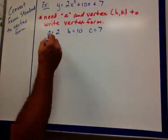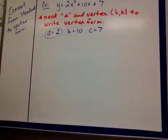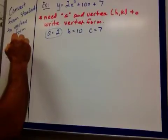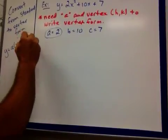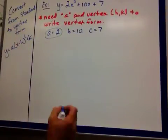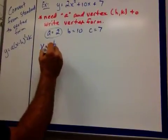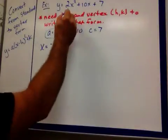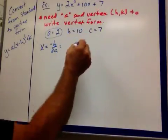So, there's my a. I got that much of it. Remember, we want to get into this. That's what we're looking to get into. I'm going to use my formula, negative b over 2a, looking for my vertex. So, my a was 2, my b is 10, my c is 7. So, I'm going to get negative 10 over 2 times 2.